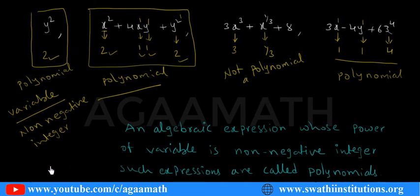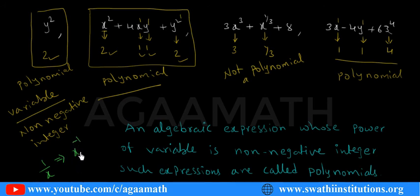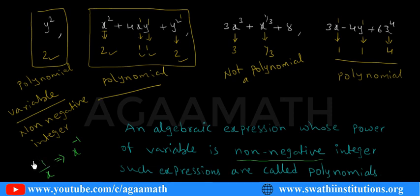For example, consider 1/x. This is an algebraic expression. We can rewrite it as x to the power minus 1. The power is negative, but we need a non-negative power — meaning powers starting from 0 or above. So 1/x is not a polynomial.